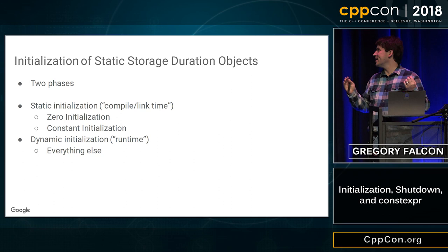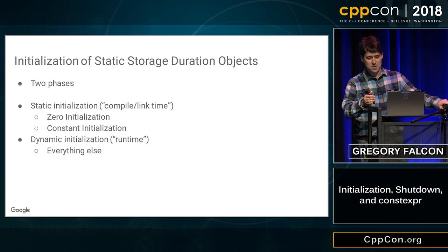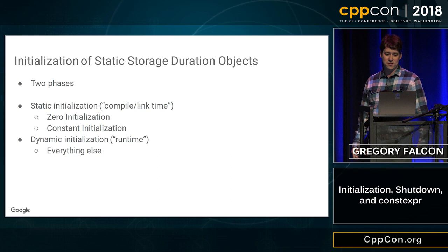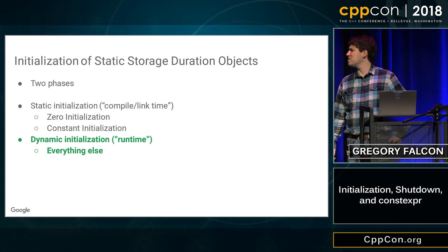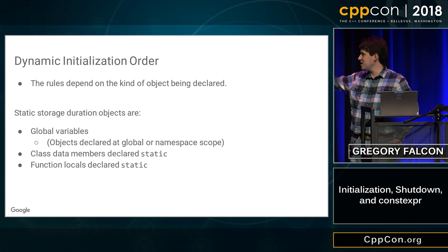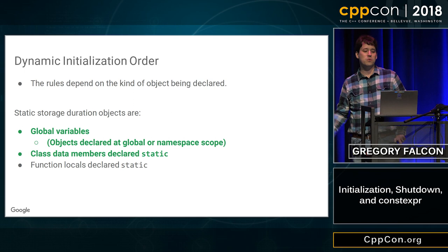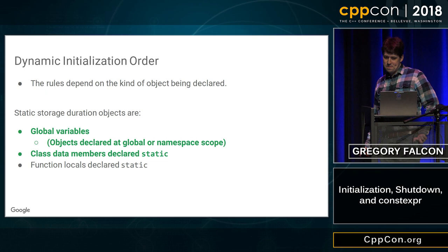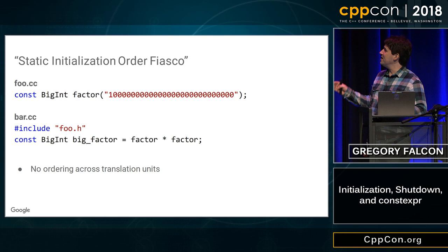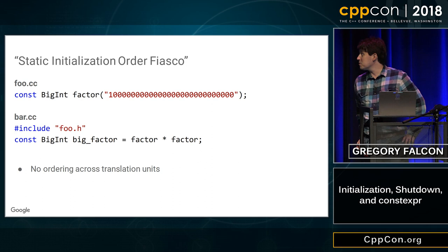Let's start by talking about dynamic initialization, because it's dynamic initialization where things can start to go wrong. Remember there are different types of objects with static storage duration — things that behave like globals and function-local static globals. Let's start with just global variables. What can go wrong with initialization order of global variables? Here's the static initialization order fiasco — terminology used to describe the fact that initialization in different translation units, in different C++ files, has no guaranteed ordering whatsoever.